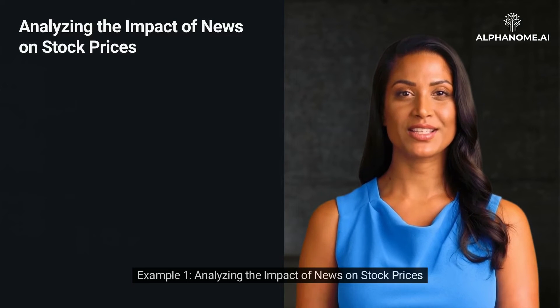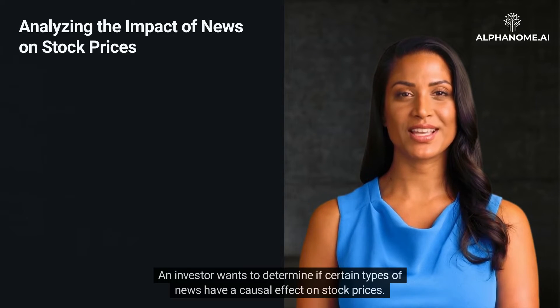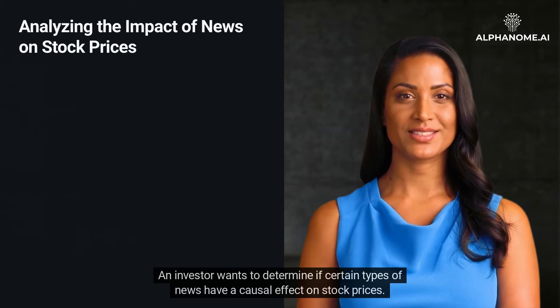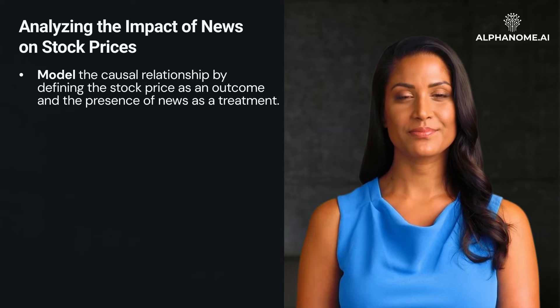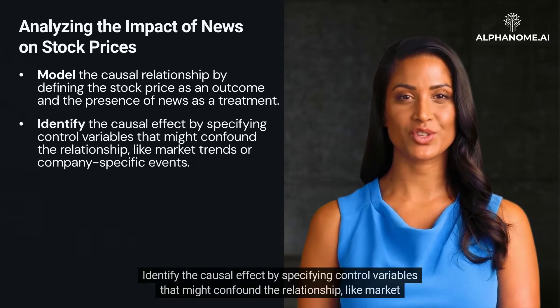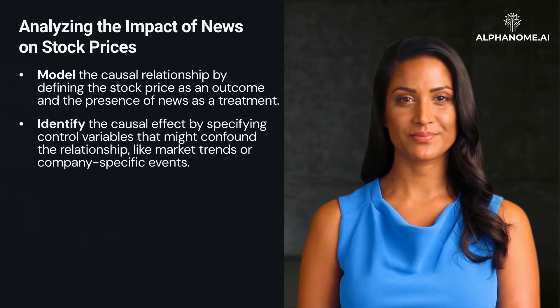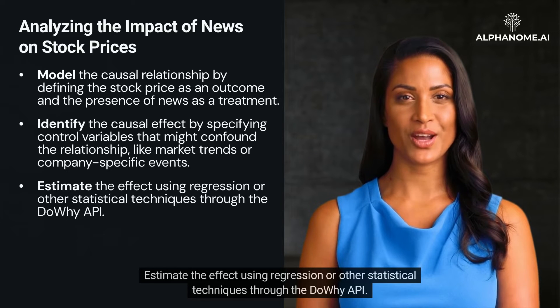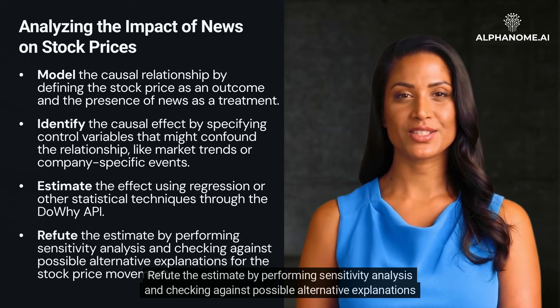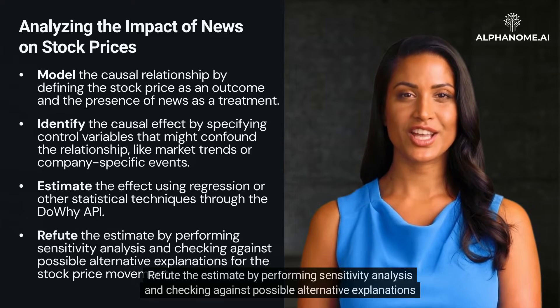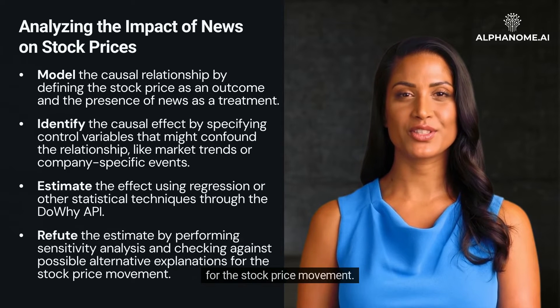Example 1: Analyzing the impact of news on stock prices. An investor wants to determine if certain types of news have a causal effect on stock prices. They can use DoWhy to model the causal relationship by defining the stock price as an outcome and the presence of news as a treatment, identify the causal effect by specifying control variables like market trends or company-specific events, estimate the effect using regression or other statistical techniques through the DoWhy API, and refute the estimate by performing sensitivity analysis and checking against possible alternative explanations for the stock price movement.